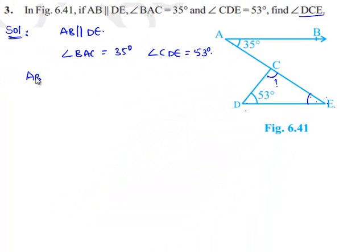Let us consider the first case, that is AB is parallel to DE and AE as transversal. Here, if we observe clearly, angle BAE and angle AED are alternate interior angles.